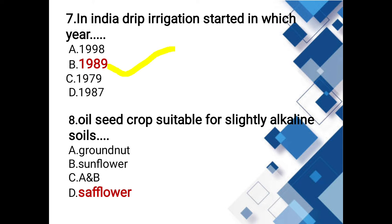Oil seed crop suitable for slightly alkaline soils: options are groundnut, sunflower, safflower. Safflower is the suitable oil seed crop for slightly alkaline soils.